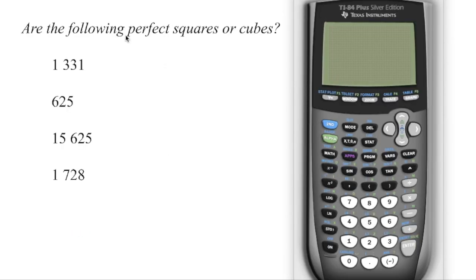You can use your calculator to determine whether or not a number is a perfect square or a perfect cube or neither. The square root button is on top of the squared button. So in order to get that button, we're going to go second function, and then we're going to press that squared button. There's the square root, and then if we type in the first number 1,331, we're looking for a whole number. So because this number is irrational, that is not a perfect square.